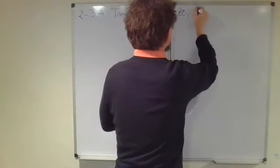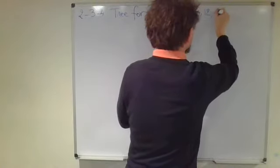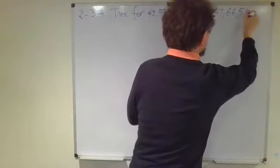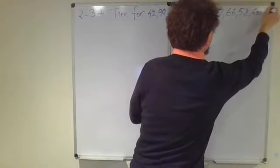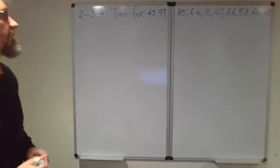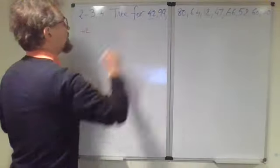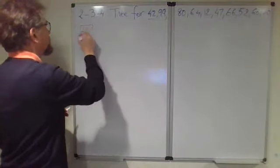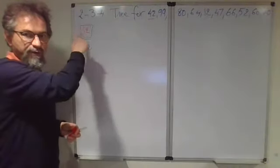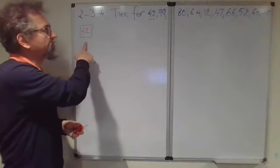We will construct a balanced search tree for the sequence here. I will start with the number 42, marking it in red, to keep track of the numbers that I will process. This is the root of our search tree. It's a two-node, a binary node.